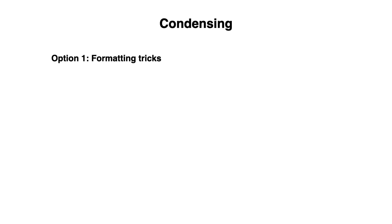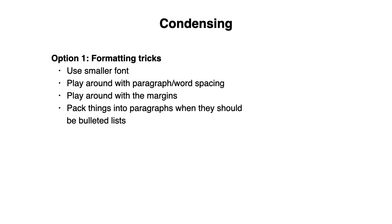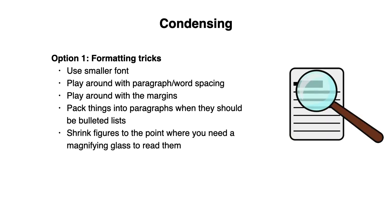The first option you could take is using nasty formatting tricks. For example, using smaller font, playing around with paragraph word spacing, playing around with the margins, packing things into paragraphs when they should be bulleted lists, and shrinking figures to the point where you need a magnifying glass to read them.